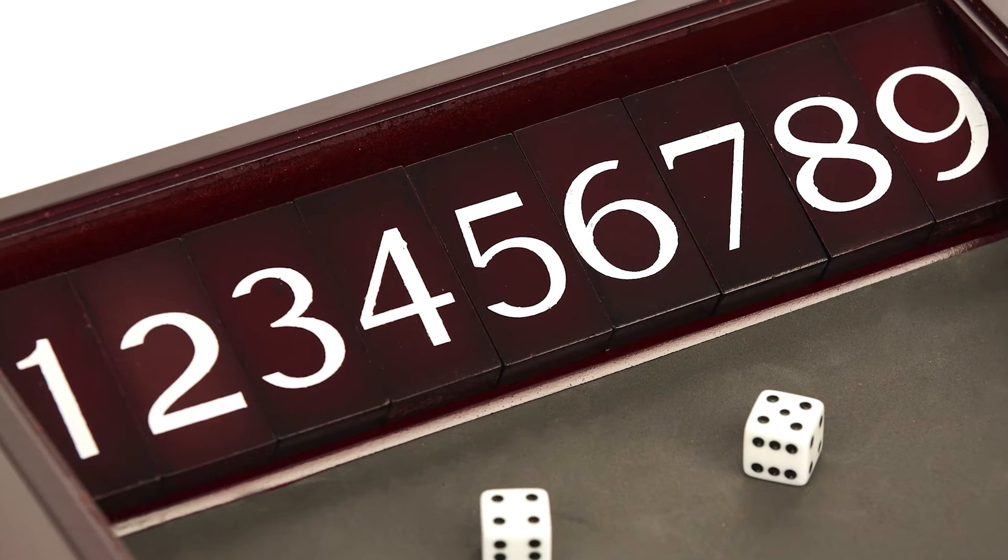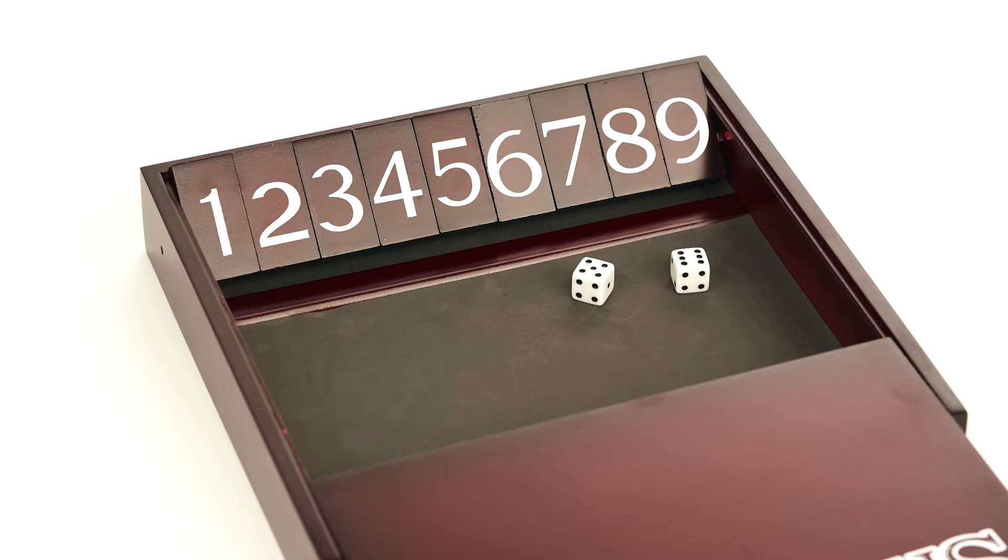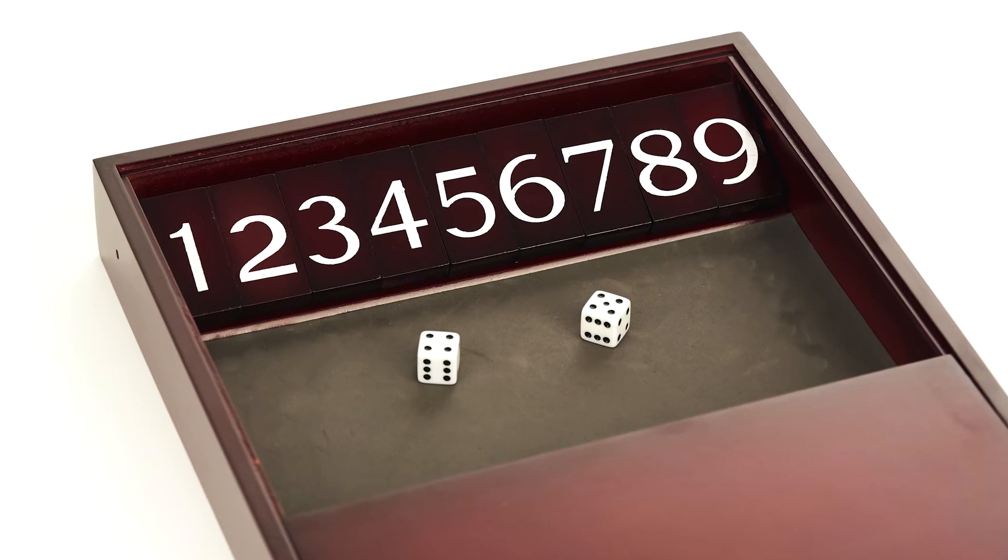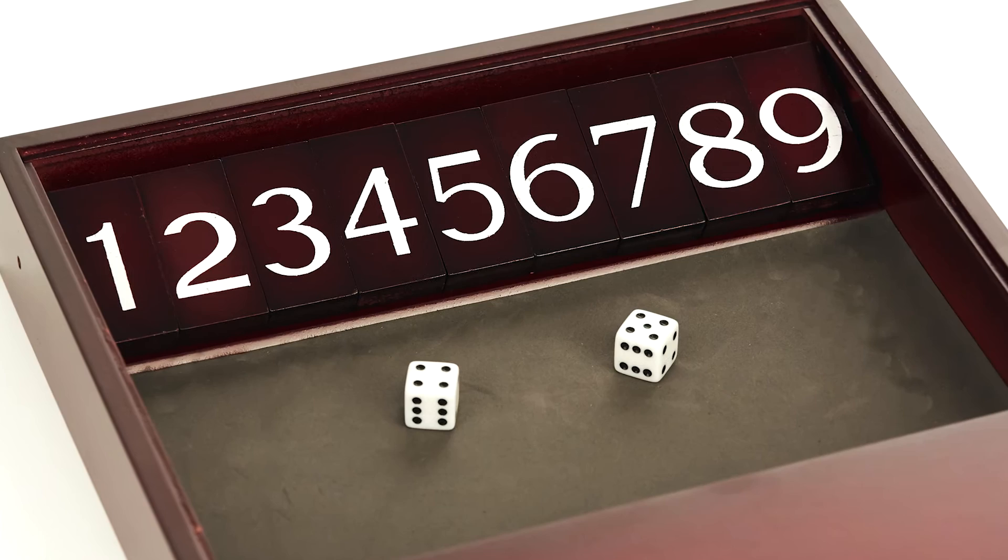The numbers 1 to 9 are printed on the board, each with a lever in front of it that can be flipped to cover it. The object of the game is to cover as many numbers as possible based on your roll of the dice.